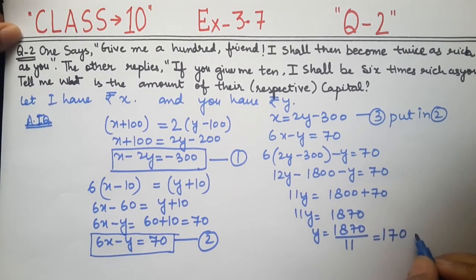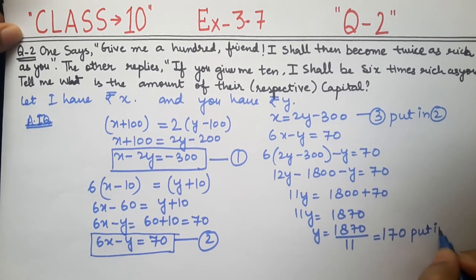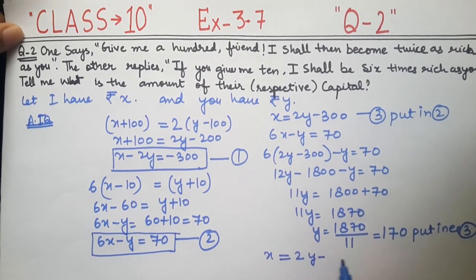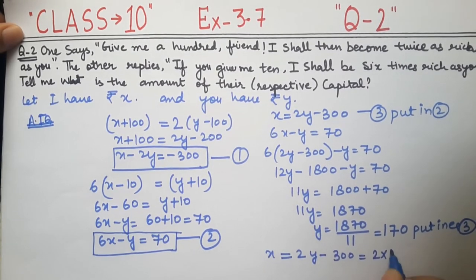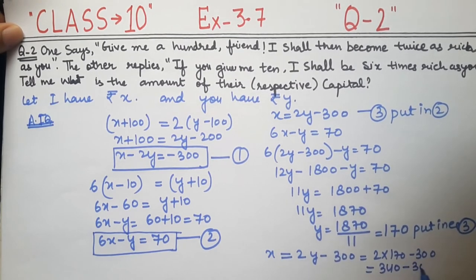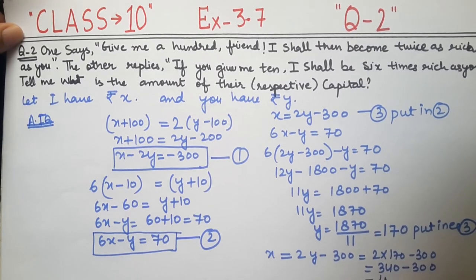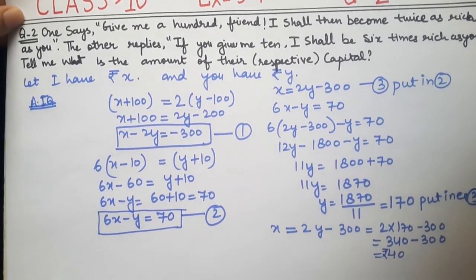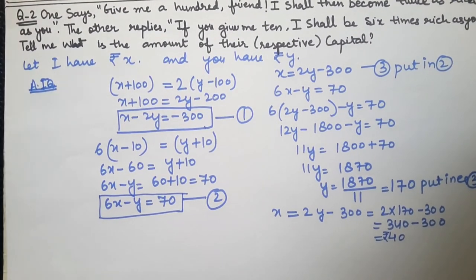Now to find x, we put y equals 170 back into equation 3: x equals 2y minus 300, so x equals 2 into 170 minus 300, which is 340 minus 300. So I have only 40 rupees but you are having 170 rupees. If you gave me 10 rupees, you would give me 6 times — and if you gave me 100 rupees, I would be double of you.